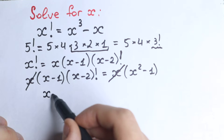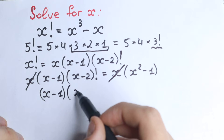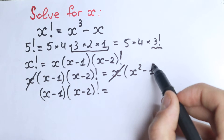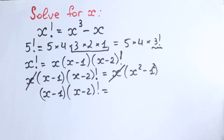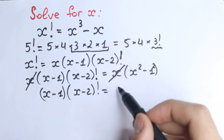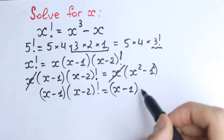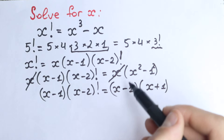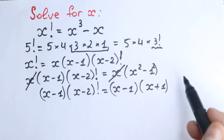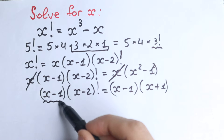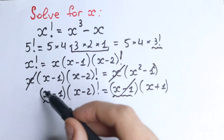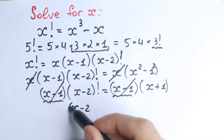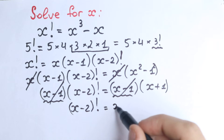So let's rewrite our expression. After cancelling x from both sides, we have (x minus 1) times (x minus 2) factorial equal to x squared minus 1. Now x squared minus 1 can be written as x squared minus 1 squared — this is our classic algebra identity — which factors as (x minus 1)(x plus 1). Take a look closely: x minus 1 appears on both sides, so we cancel it. After this really interesting trick, we can easily write: (x minus 2) factorial equals x plus 1.